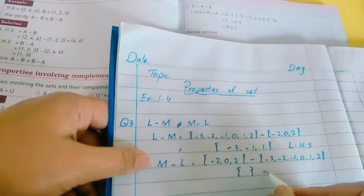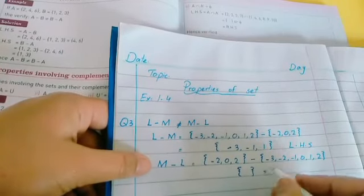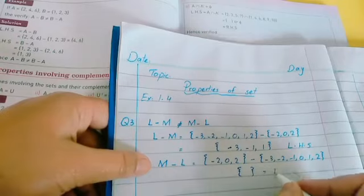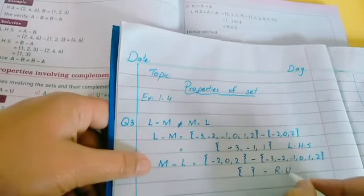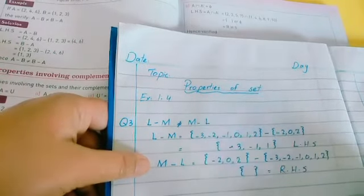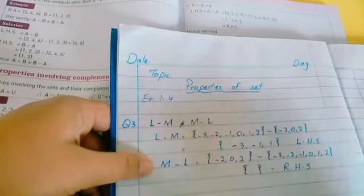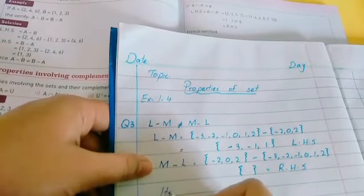So it's empty set here when you have no value remaining, write empty set here. You have to mention your right hand side is proved, you got the answer.